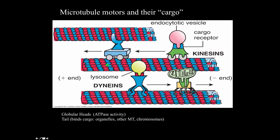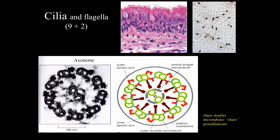The cargo could also be chromosomes. Now let's talk briefly about cilia and flagella. Cilia and flagella have a 9-plus-2 arrangement of microtubules, as seen in this electron micrograph of a ciliary axoneme.